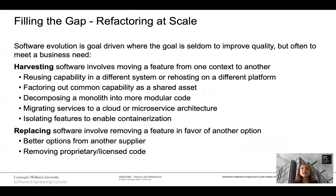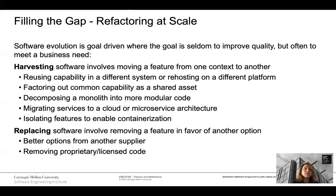The gap that we identify, and that we lay the vision for, we're referring to as refactoring at scale. This is goal driven, where the goal is more often to meet a business goal rather than simply improve software quality. For example, harvesting software involves moving a feature from one context to another, reusing a capability, factoring out common capabilities as shared assets, decomposing a monolith into modular code, or isolating a feature to enable containerization, or replacing such as providing better options from other suppliers, or removing proprietary license code. These examples are not uncommon in industry, especially when there is new technology, and often get ignored because of lack of effective tool support or become very time-consuming and error prone.